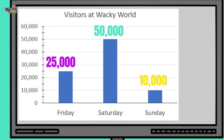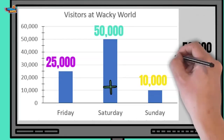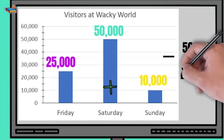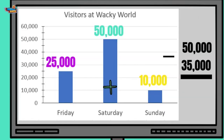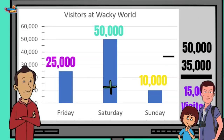Friday's total visitors was 25,000 and Sunday's visitors equaled 10,000. We add these together to get a total of 35,000 visitors. Now Saturday's total visitors was 50,000. We were looking for the difference between Saturday's visitors and Friday and Sunday's visitors combined, so we will need to subtract. 50,000 minus 35,000 equals 15,000 visitors.